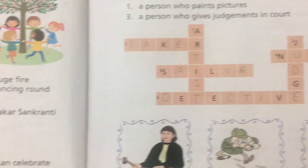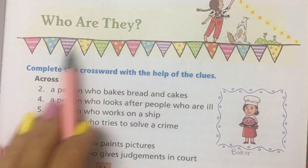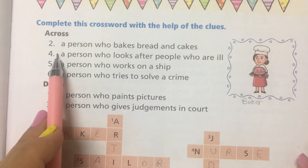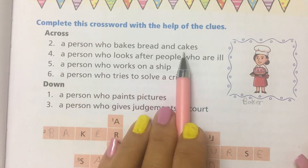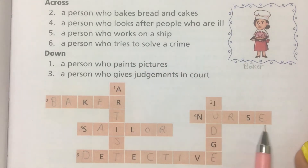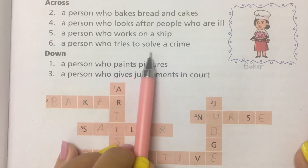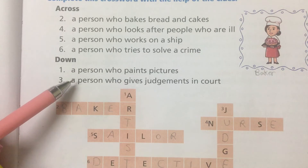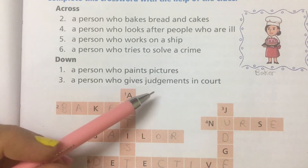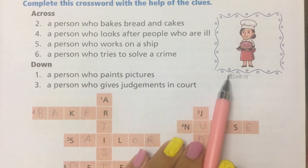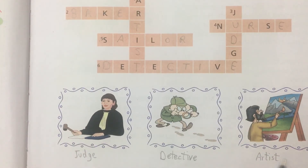Now on the next page, page number 30, it is talking about who are they. Complete this crossword with the help of the clues. Across: Number 2 — a person who bakes bread and cakes is called a baker. Number 4 — a person who looks after people who are ill is a nurse. Number 5 — a person who works on a ship is a sailor. Number 6 — a person who tries to solve a crime is a detective. Down: Number 1 — a person who paints pictures is an artist. Number 3 — a person who gives judgement in court is the judge.